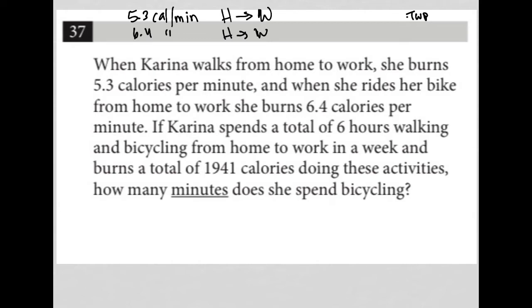If Karina spends a total of six hours walking and bicycling from home to work. Okay. So walking and bicycling. So I'm going to make these variables. So W for walking, B for bicycling. So we know that W plus B is equal to six hours.